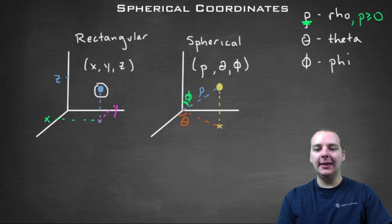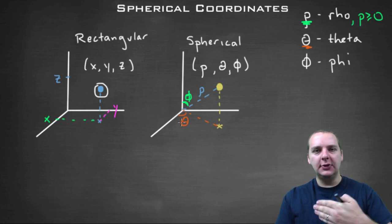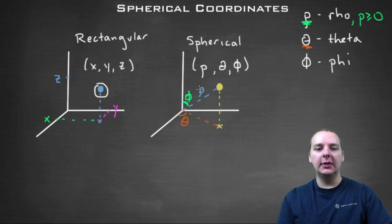The theta is the same theta that it was in cylindrical form. This is the angle from the positive x axis that it swings out in the x, y plane. So if you look at this almost like a shadow in the x, y plane, if you let the z coordinate be zero.